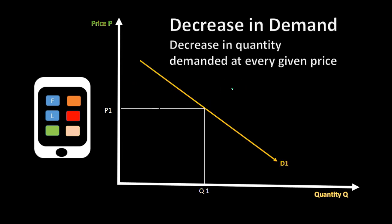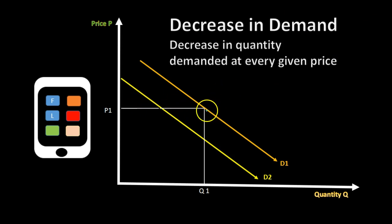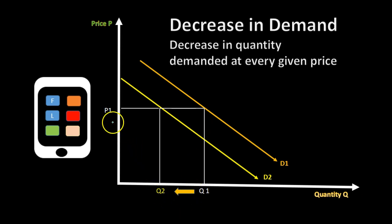A decrease in demand means there's a decrease in quantity demanded at every given price. If we were at a certain price before and there's a shift inward to the left of the demand curve, then people are willing to purchase fewer. Price stayed the same but people are willing to purchase less. We can think of a few things other than a change in price that would impact our purchasing behavior in certain types of goods.